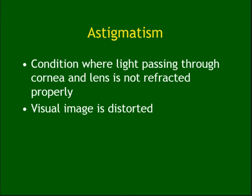Accommodation is where you change the curvature of the lens to accommodate vision. Astigmatism is important — it is an error of refraction where the curvature of the cornea or lens is irregular, so refraction is not normal and the vision is distorted. Special glasses can fix this condition.